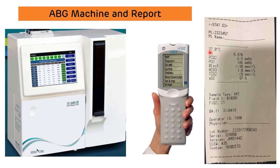The ABG report gives values for pH, partial pressure of carbon dioxide (PCO2), partial pressure of oxygen (PO2), bicarbonate, and O2 saturation as a percentage. If the machine is high-end, it also provides electrolyte values — sodium, potassium, and chloride.